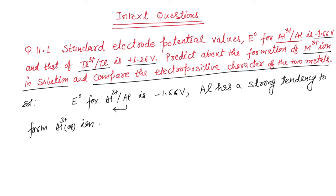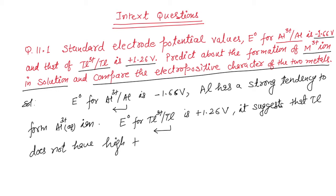On the other hand, for thallium 3 plus to thallium E° value is plus 1.26 volt. That means from thallium to thallium 3 plus value is minus 1.26 volt. It suggests that thallium does not have high tendency to form thallium 3 plus.